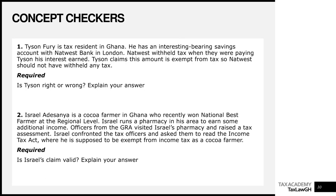The next concept checker: Is Israel's claim valid? Israel Adesanya is a cocoa farmer in Ghana who recently won national best farmer at the regional level. Israel also runs a pharmacy in his area to earn additional income. Officers from the GRA visited Israel's pharmacy and raised a tax assessment. Israel confronted the tax officers and asked them to read the Income Tax Act, claiming he is exempt from income tax as a cocoa farmer.